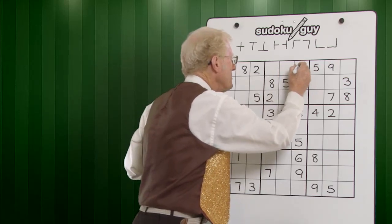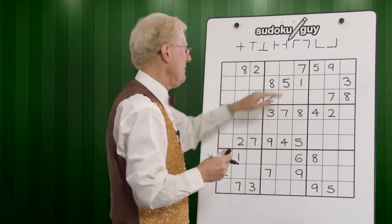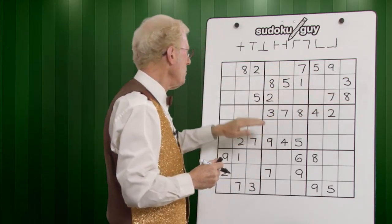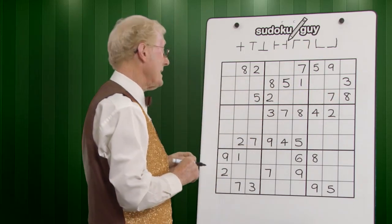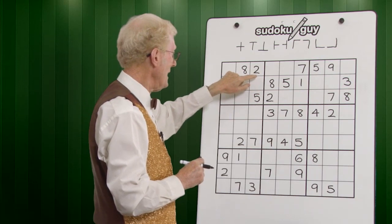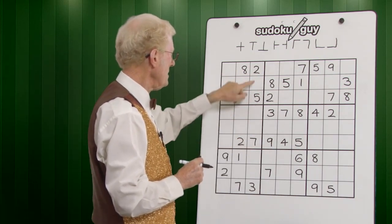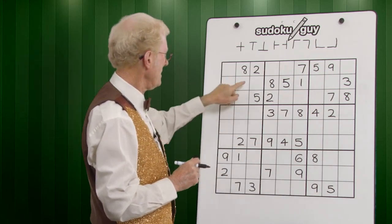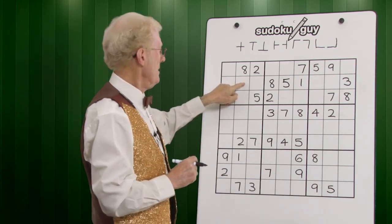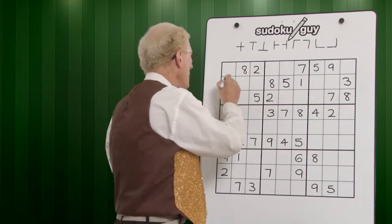Now, we have two sevens, a top and a bottom. So we can work out where the sevens go across in this block. We could have a seven here, but let's look down. This seven means you can't have a seven there. This seven means that it cancels out a seven here. Therefore, the seven has to go there.